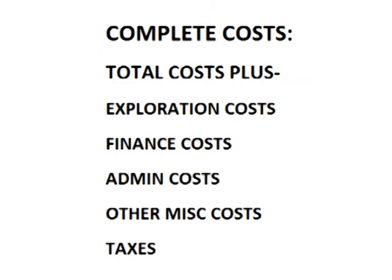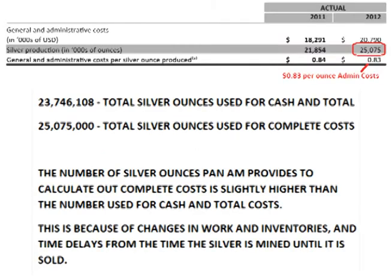For complete costs, I took the remaining expenses — exploration costs, administration costs, finance costs and credits, and taxes — and divided those costs by the number of payable silver ounces produced of 25,075,000, as provided in the 2012 annual report. I then added those costs to the total cost to obtain a complete cost per ounce.